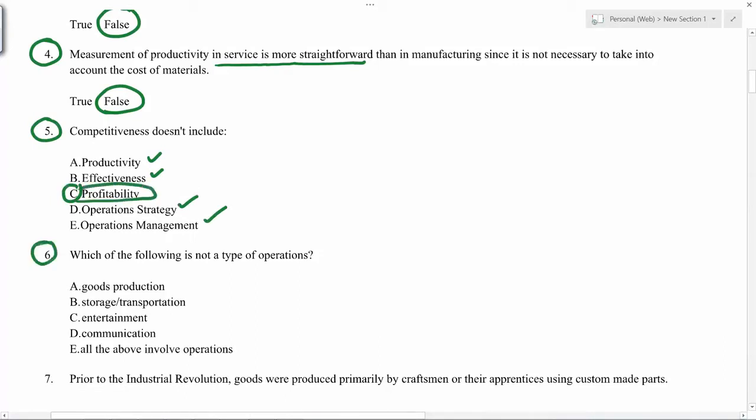Which of the following is not a type of operation? So goods production is operation, storage, transportation is operation, entertainment has operation, communication has operations. So the correct choice will be...